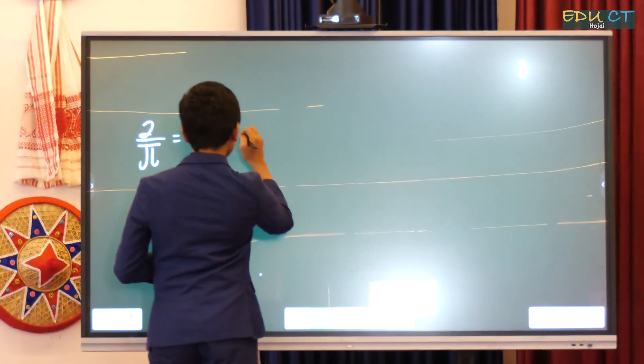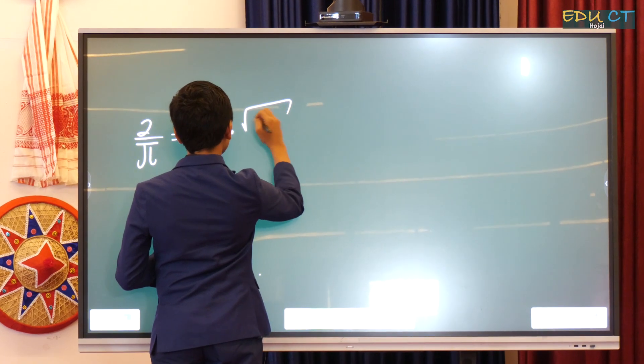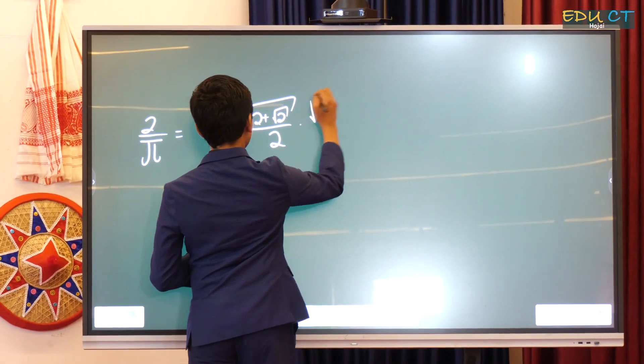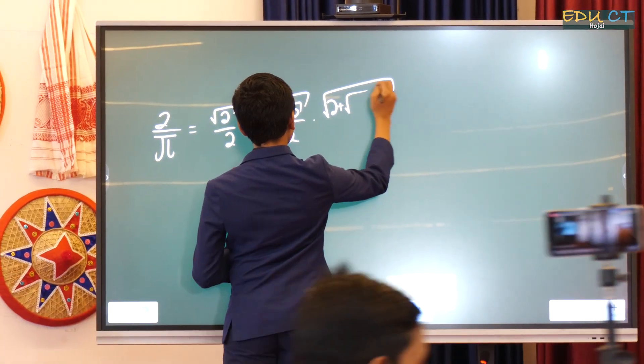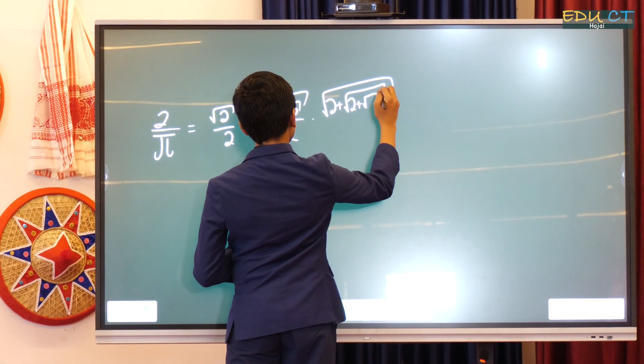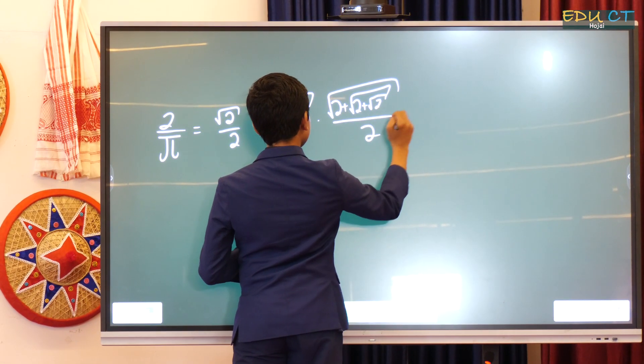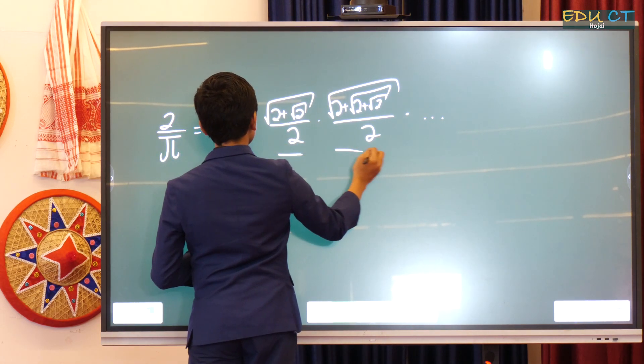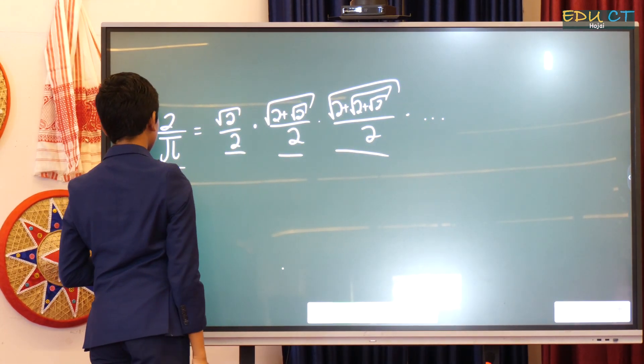It should be times the square root of 2 plus the square root of 2 over 2 times the square root of 2 plus the square root of 2 plus the square root of 2 over 2, and so on and so forth. And of course, each of these are all irrational numbers multiplied to give us another irrational number.